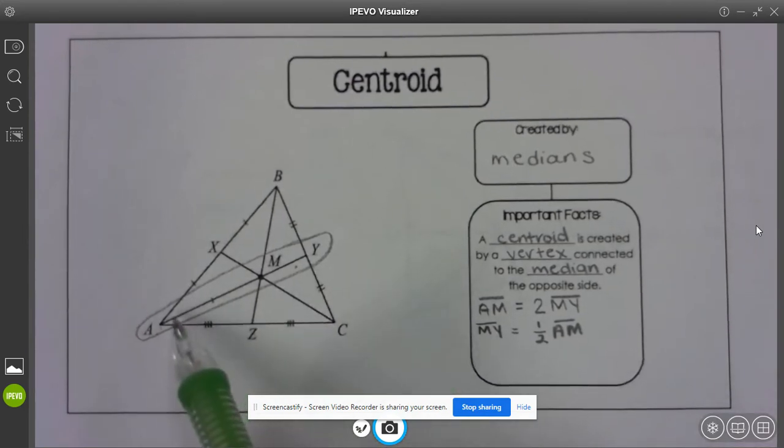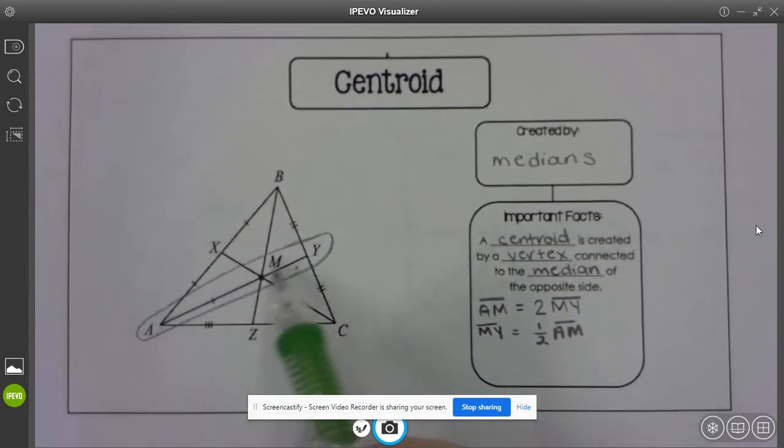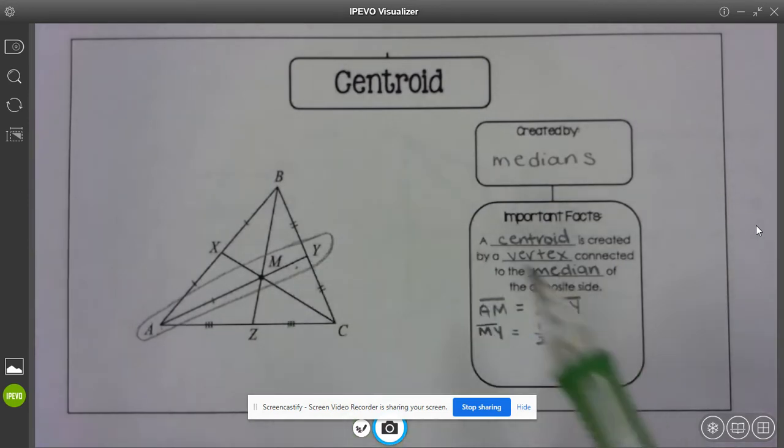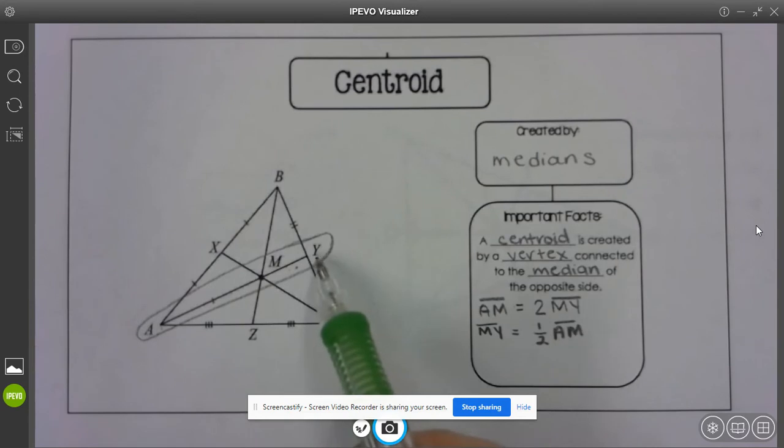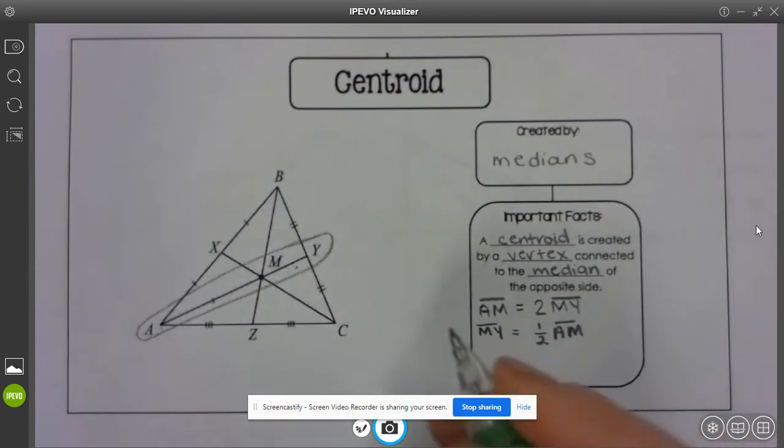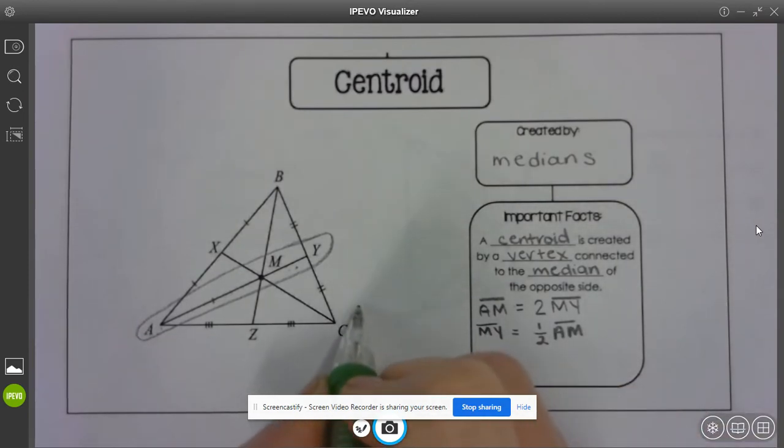Now if I'm using the chunks of three, I'm going to look at the entire line, and I'm going to make a statement about AM in comparison to AY, and I'm going to make a statement about MY in comparison to AY.